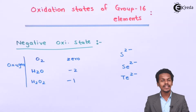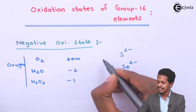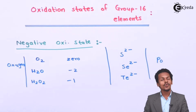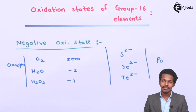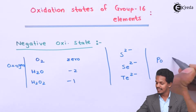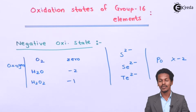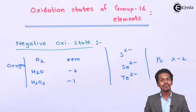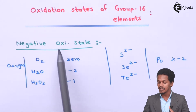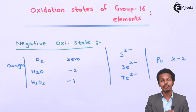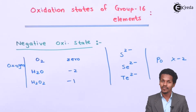The last element of group 16 is polonium. Being metallic in nature, polonium does not exhibit a minus 2 oxidation state. This covers all the information related to the negative oxidation states of the group 16 elements. Now let us move on to the positive oxidation states exhibited by group 16 elements.